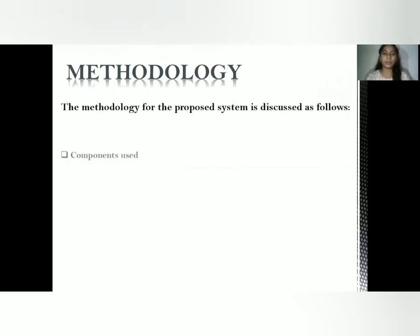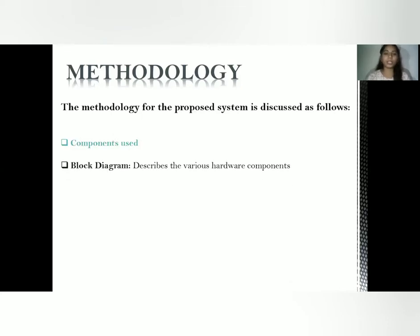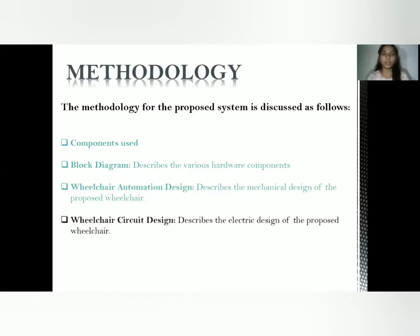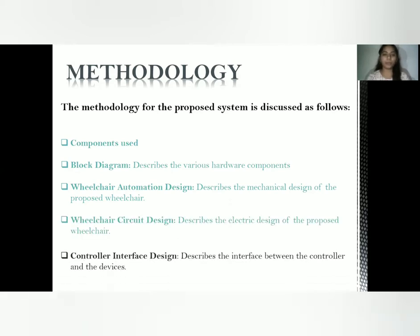Now let us see the methodology of the project. In the methodology part, we have categorized into various sectors: components used, covering both hardware and software. Next is the block diagram which describes the various hardware components used. Then we look into wheelchair automation design, wheelchair circuit design covering the pin-to-pin connection of the Raspberry Pi and other components, and finally the controller interface design.